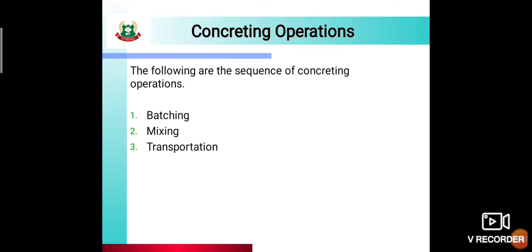Transportation means how to transport the formed concrete to its final destination. Then placing — whatever concrete you transported to the site, you place it into the formwork, whether it is for a beam, column, or slab. After placing, the concrete must be properly compacted to remove air voids.